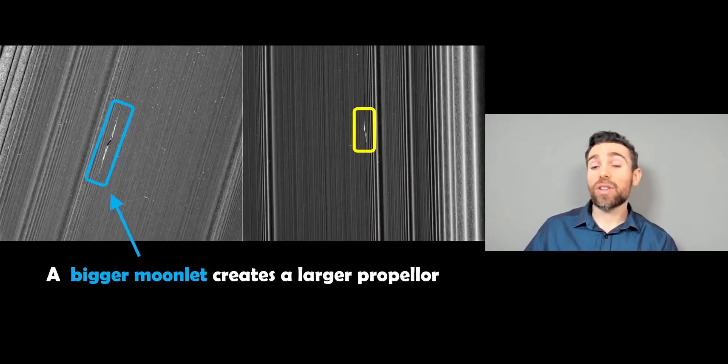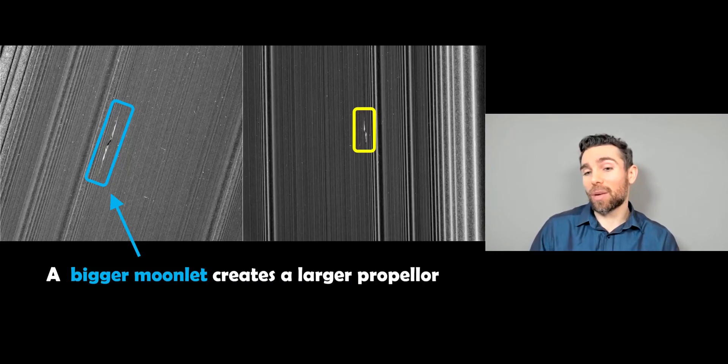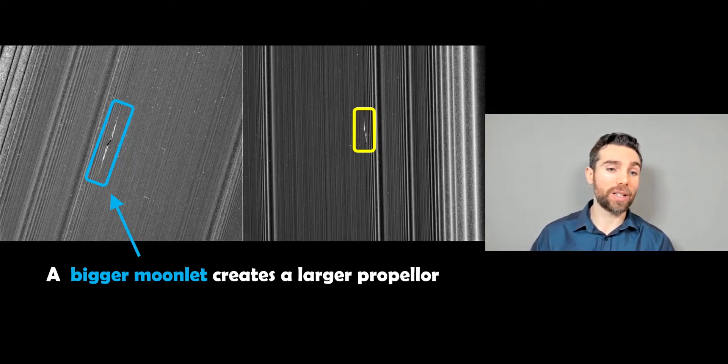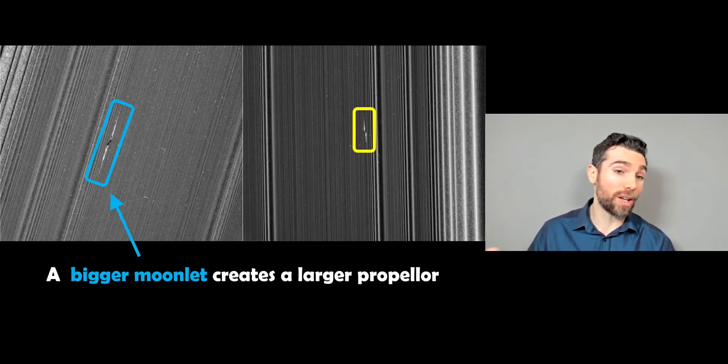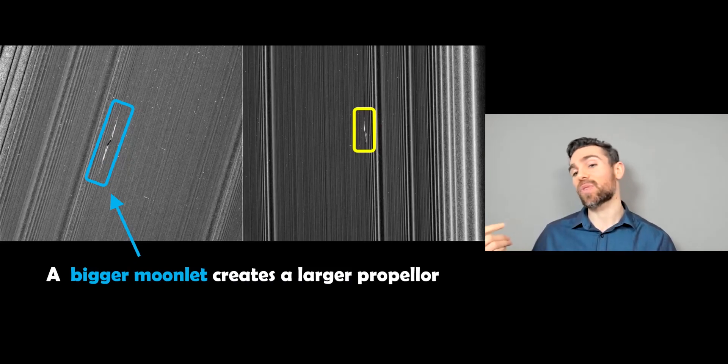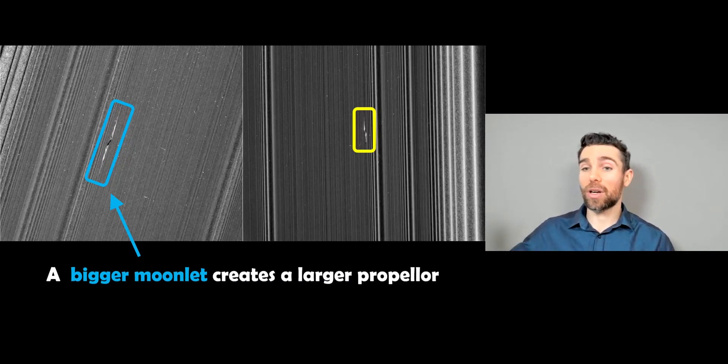So finally, if you've got a bigger moonlet, you get a bigger propeller, because they have more mass, and their gravitational interaction with the nearby particles is greater. So even though we can't see the moonlet in the center, we can measure the size of that propeller, because actually those are quite straightforward to see, or easier to see, because they're bigger. And then we can determine the size of the moonlet purely from that. And that's how we've determined that these are around about a hundred meter sort of size compared to kilometer plus size for the ones that create the full gap.